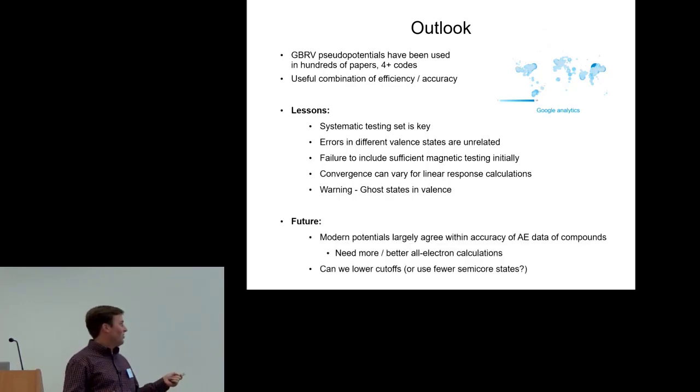Convergence can vary between linear response calculations and total energy calculations. Some outlook in the field: I think modern pseudo potential sets largely agree with the available all-electron data. I'd encourage experts in doing all-electron calculations to improve on the all-electron data that I've published. Also a different area we could push that has gotten less attention is can we move toward lower cutoffs, better convergence properties. That was really a focus of this pseudo potential library from the start.